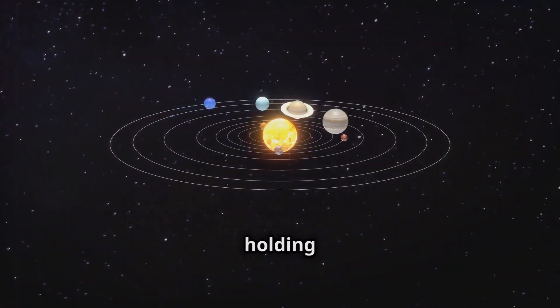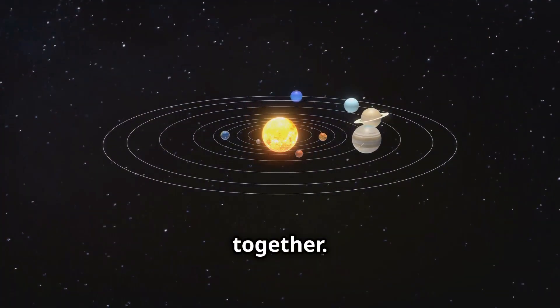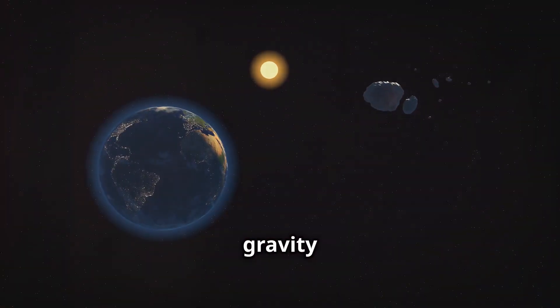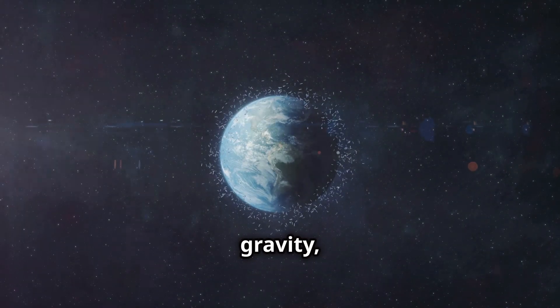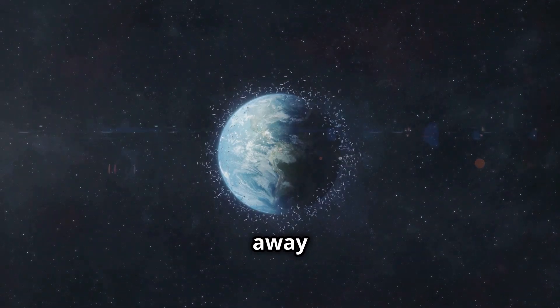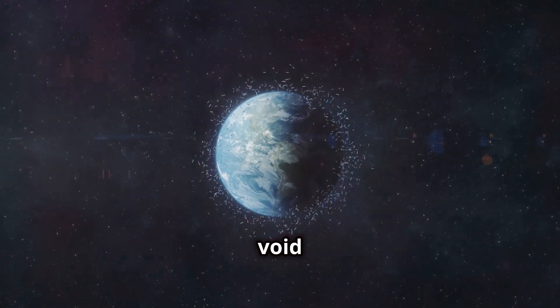Gravity is responsible for holding our solar system together. The sun's immense gravity keeps Earth and the other planets in orbit. Without gravity, our planet would simply drift away into the cold, dark void of space.